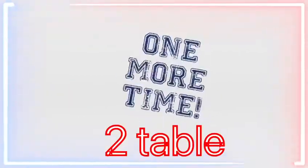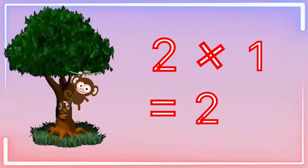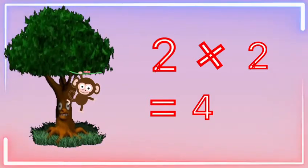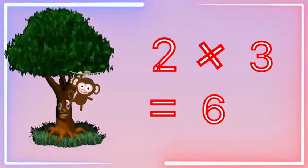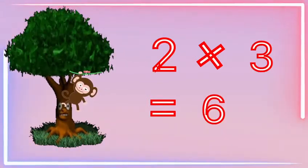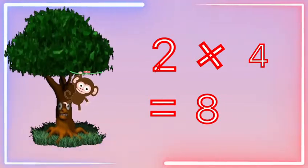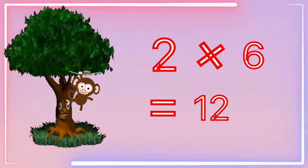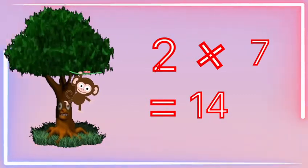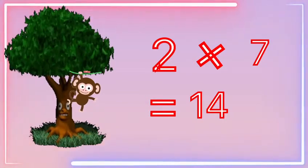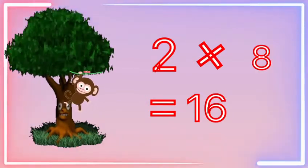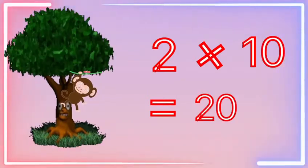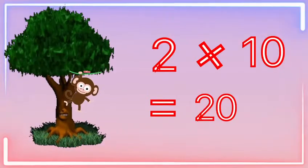Let's learn the two table again. 2 times 1 is 2. 2 times 2 is 4. 2 times 3 is 6. 2 times 4 is 8. 2 times 5 is 10. 2 times 6 is 12. 2 times 7 is 14. 2 times 8 is 16. 2 times 9 is 18. 2 times 10 is 20.